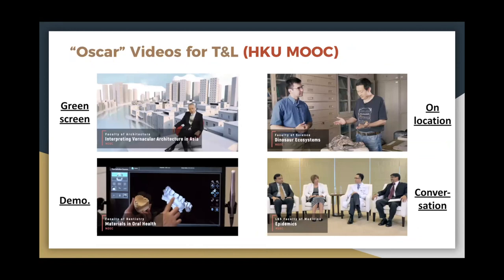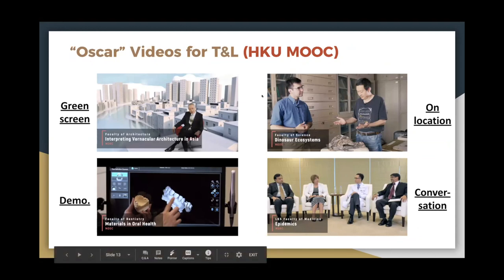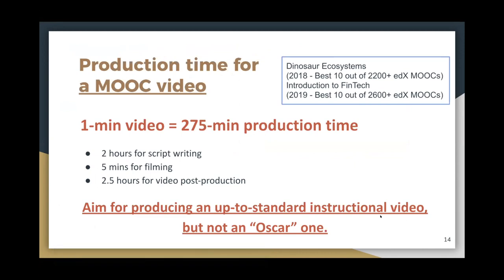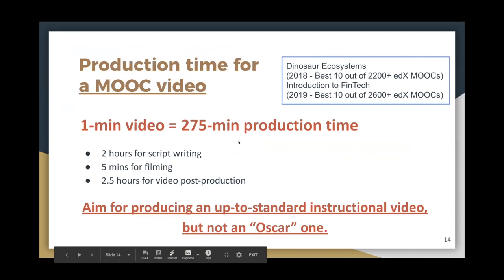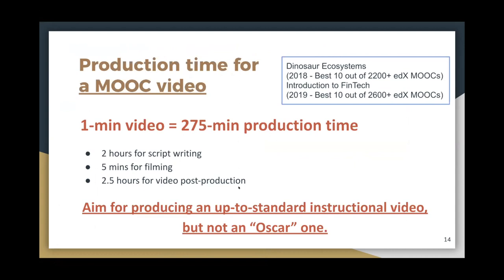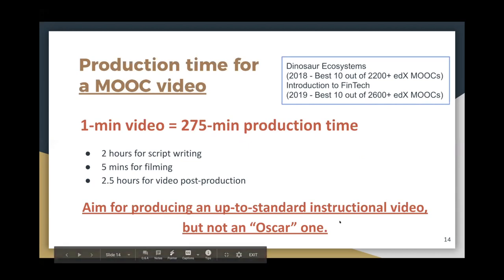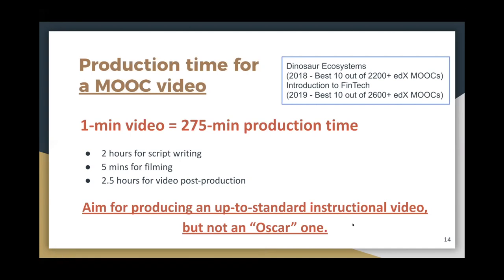Some of you may want to produce Oscar-level videos for teaching and learning. Our team does produce high-quality videos for Hong Kong MOOCs — with green screens, on-location filming, demos, and conversations — but those require 235 minutes of production time per minute of video, covering script writing, filming, and post-production. Two of our MOOCs were in the Best 10 edX MOOCs in 2011 and 2019. For on-campus TML, aim for up-to-standard instructional videos rather than Oscar-level ones.